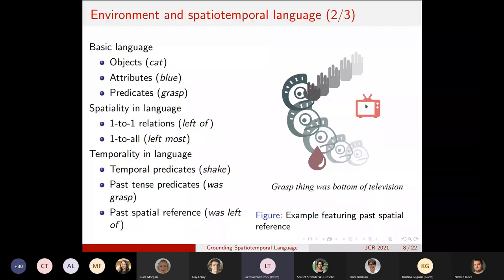We can refer to an object, to a thing, for example, by the fact that it is left of another thing. And similarly, we can refer to an object by its relationship in space to all the other objects, by instance, saying that it is the leftmost object.